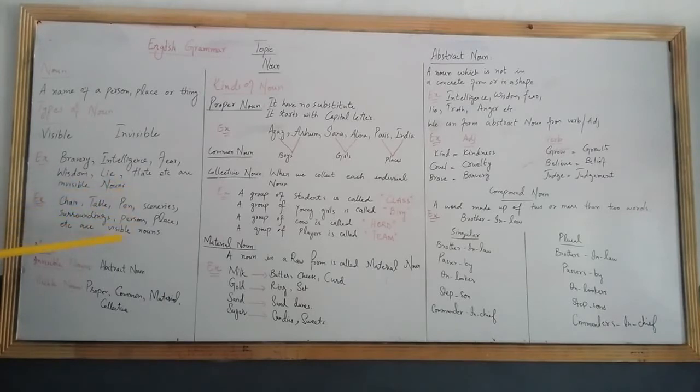An important note: there are five kinds of nouns. We have proper noun, common noun, collective noun, material noun, and abstract noun. Now the next topic is the kinds of noun.